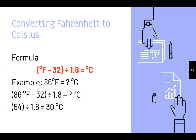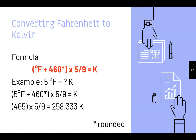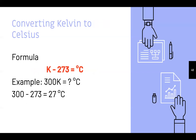Converting Fahrenheit to Kelvin: (°F + 460) × 5/9 = K. Example: 5°F — 5 + 460 = 465, multiplied by 5/9 = 258.33 K. Converting Kelvin to Celsius: K − 273 = °C. Example: 300 K − 273 = 27°C.